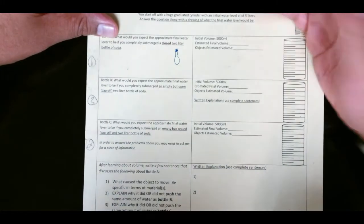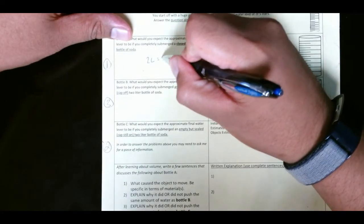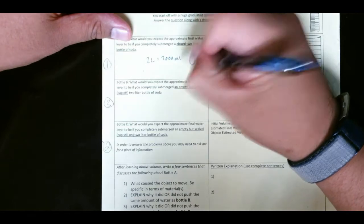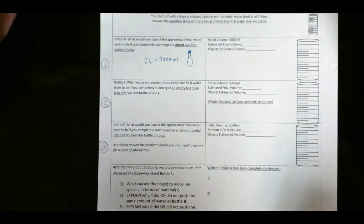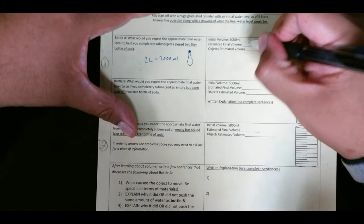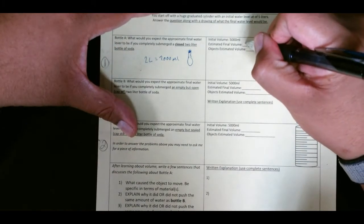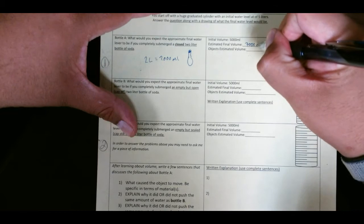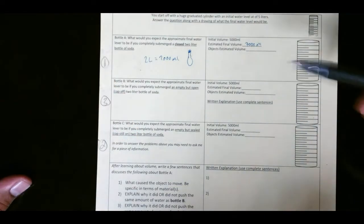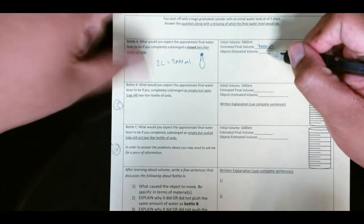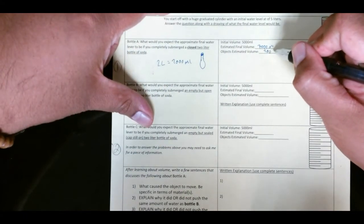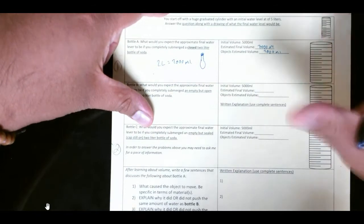Many of you started off by saying, okay, well, 2-liter is equal to 2,000 mL. So if I put it in, the water is going to go up because it's pushing water out of the way, right? It's going to go up to 7,000 mL, like that. Now, we're going to have to come back and change this. I'll explain it a little bit.